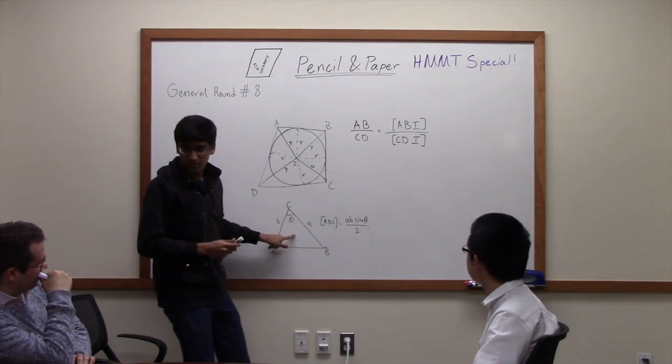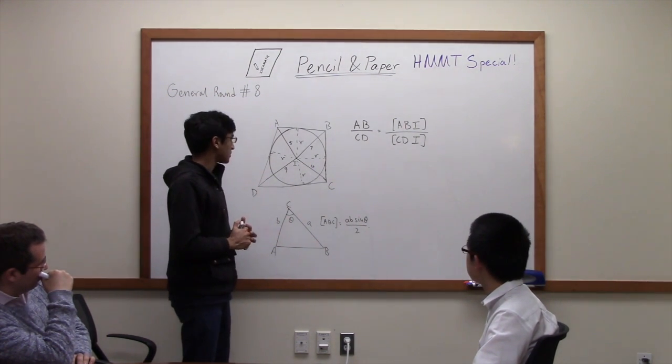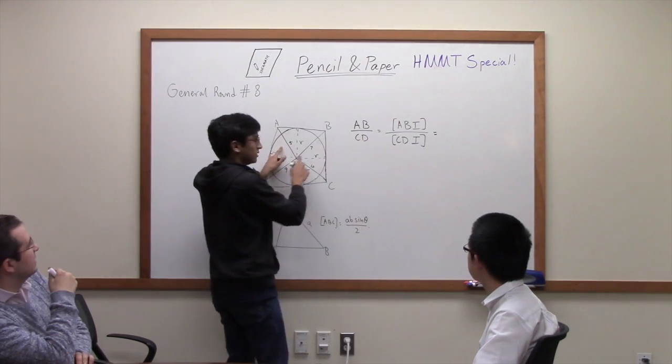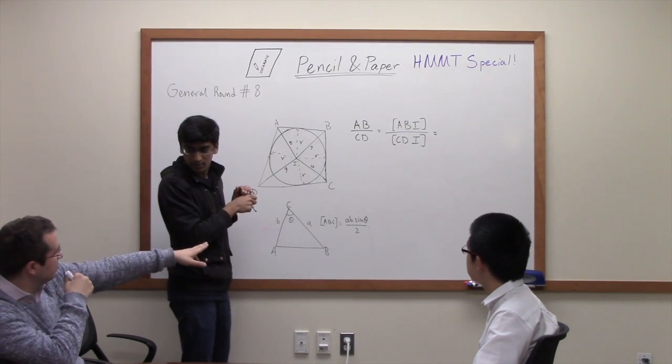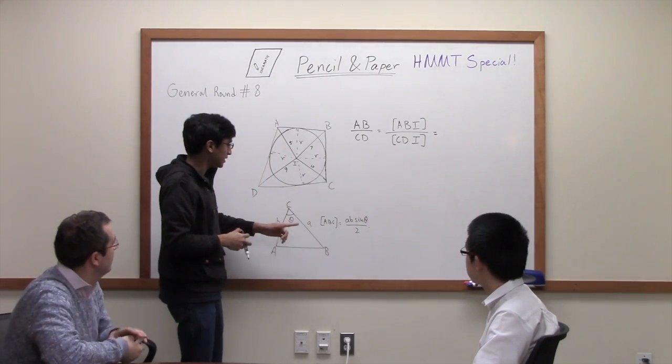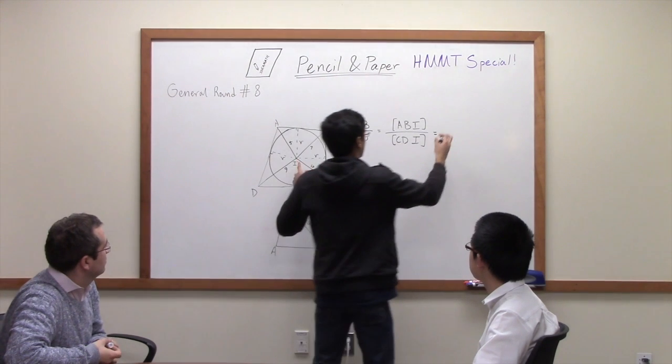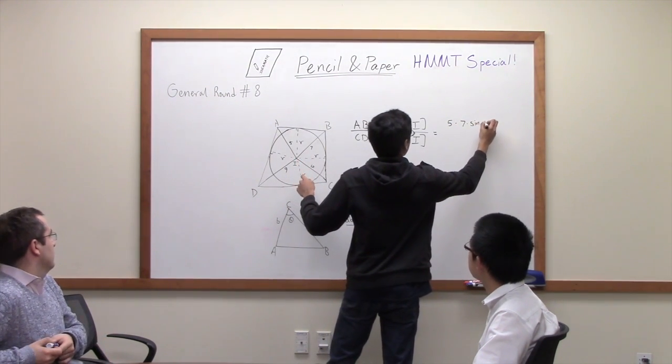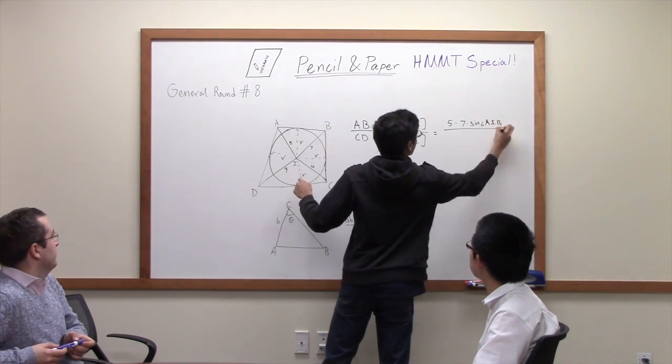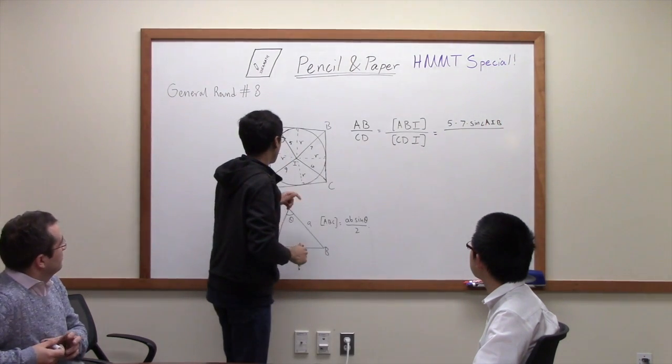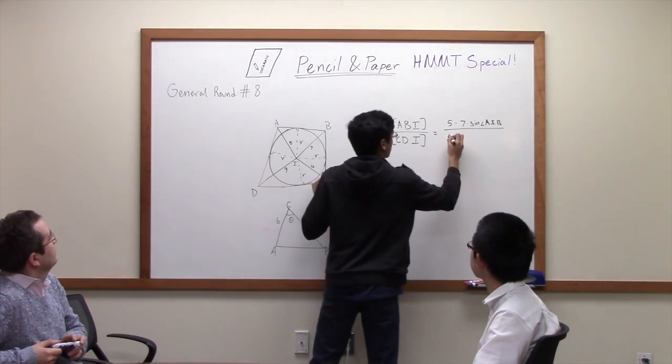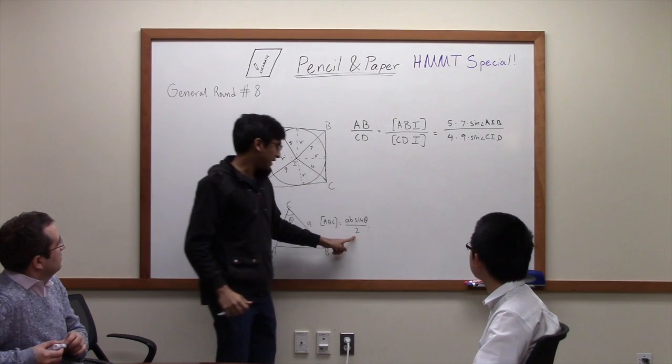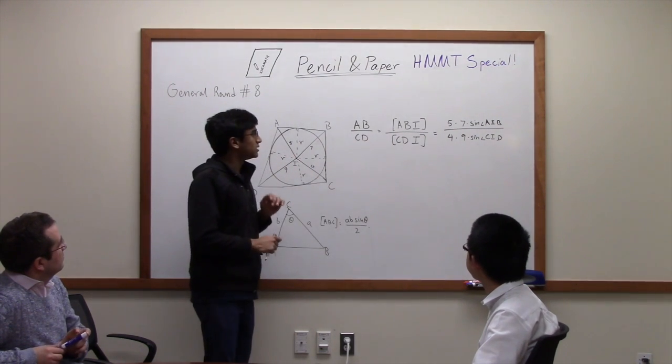So you can also use this formula, which is very nice because you know the product of the sides. So this is equal to 5 times 7 times sine of AID over 4 times 9 times sine of CID. And then these one halves will cancel. This is great.